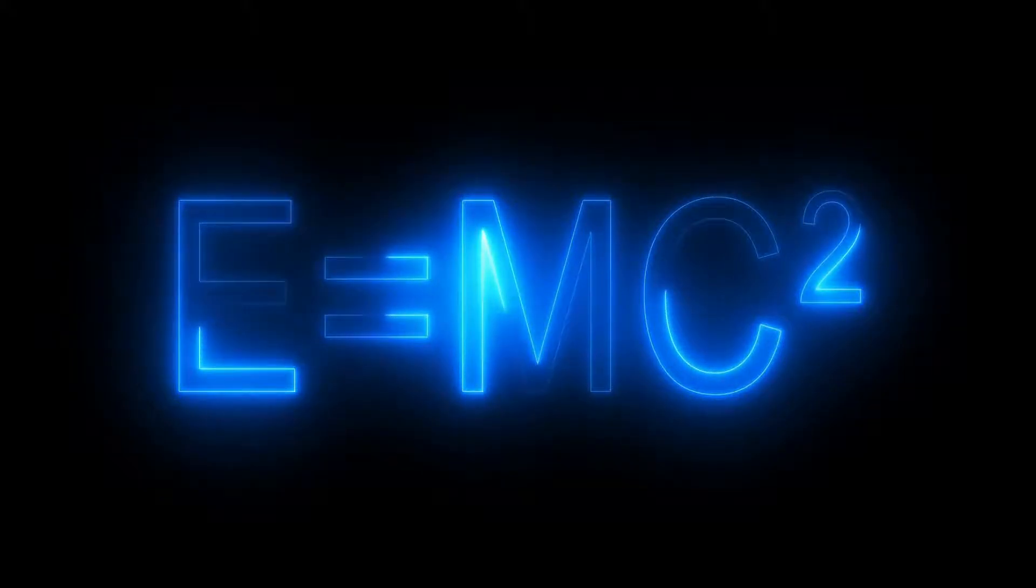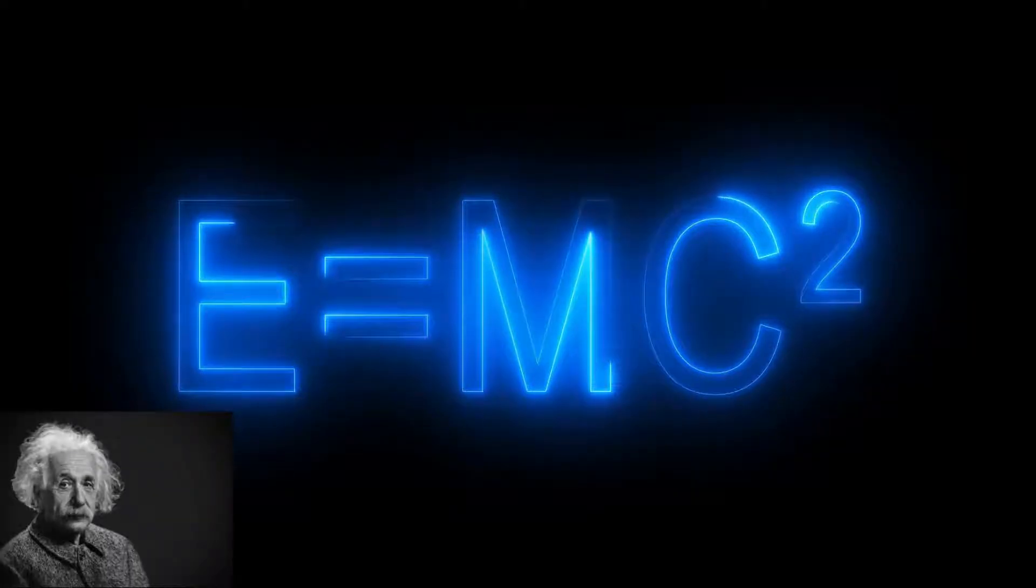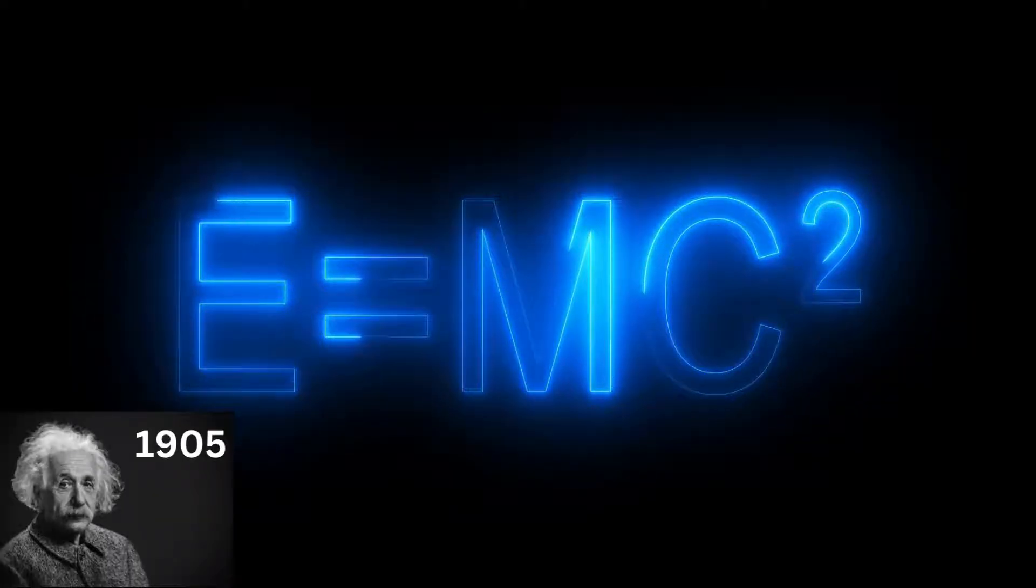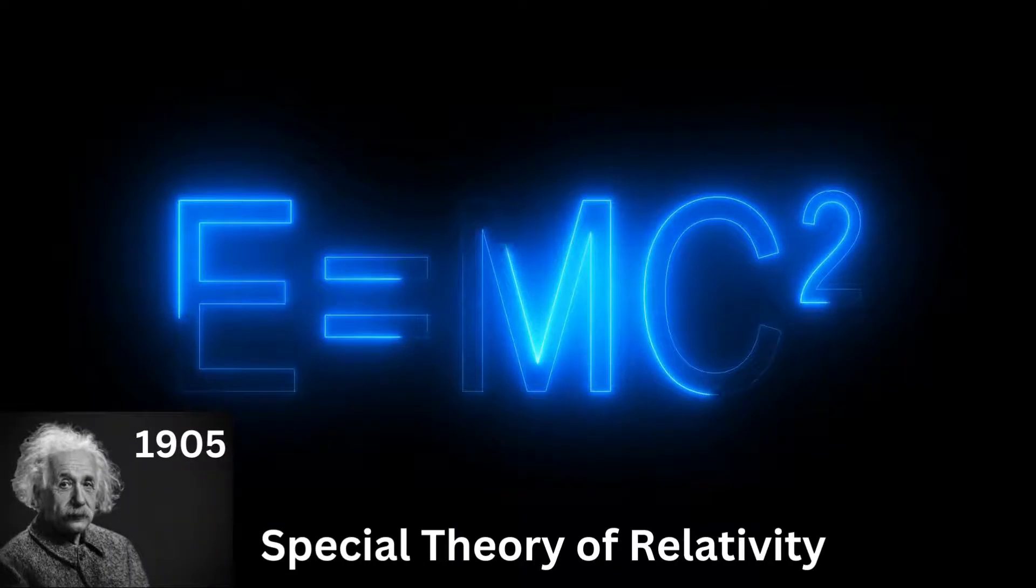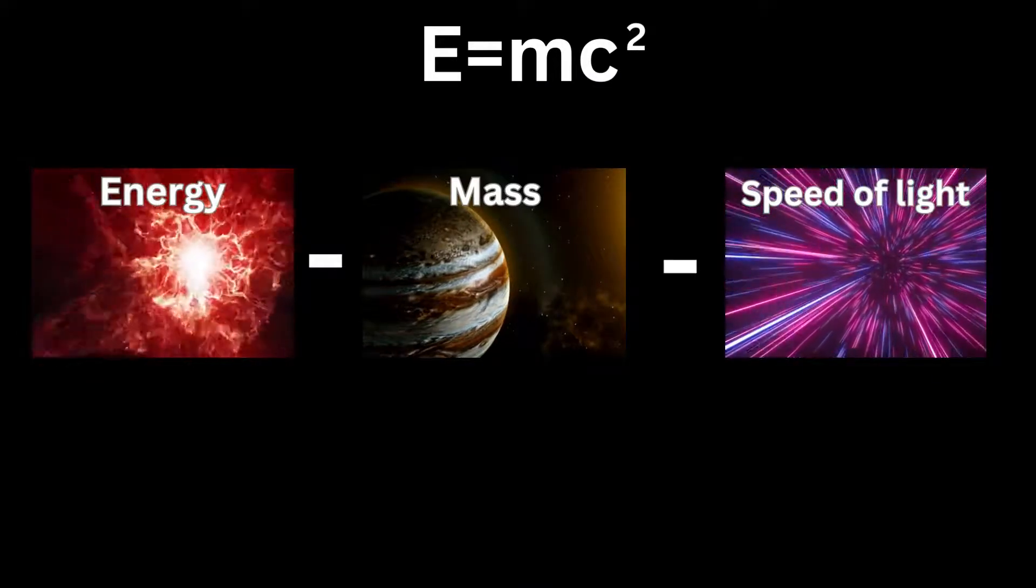One of the most well-known physics equations is E equals mc squared, which Albert Einstein proposed in 1905 as part of his special theory of relativity. It connects energy to mass and the speed of light.